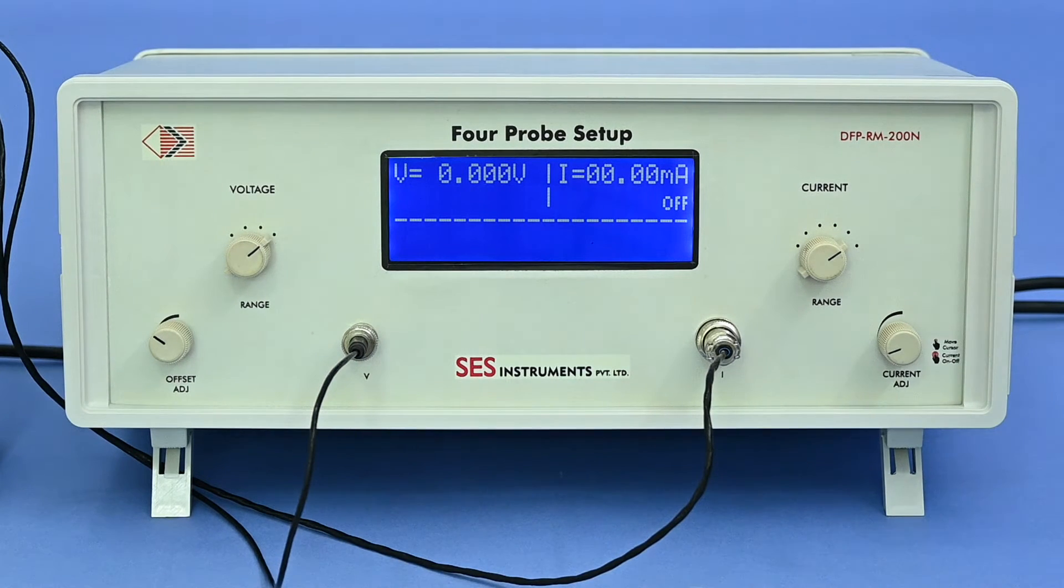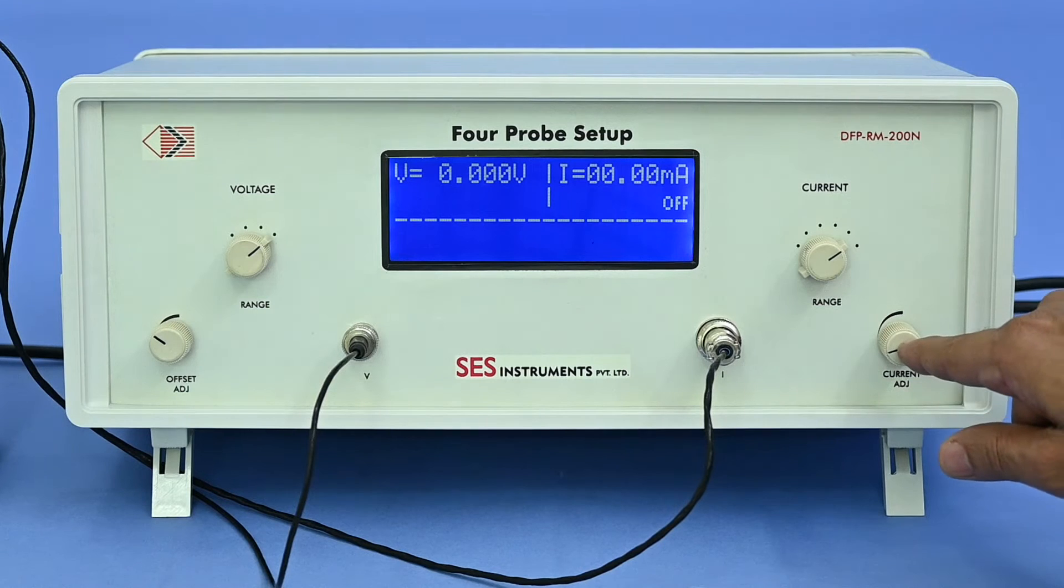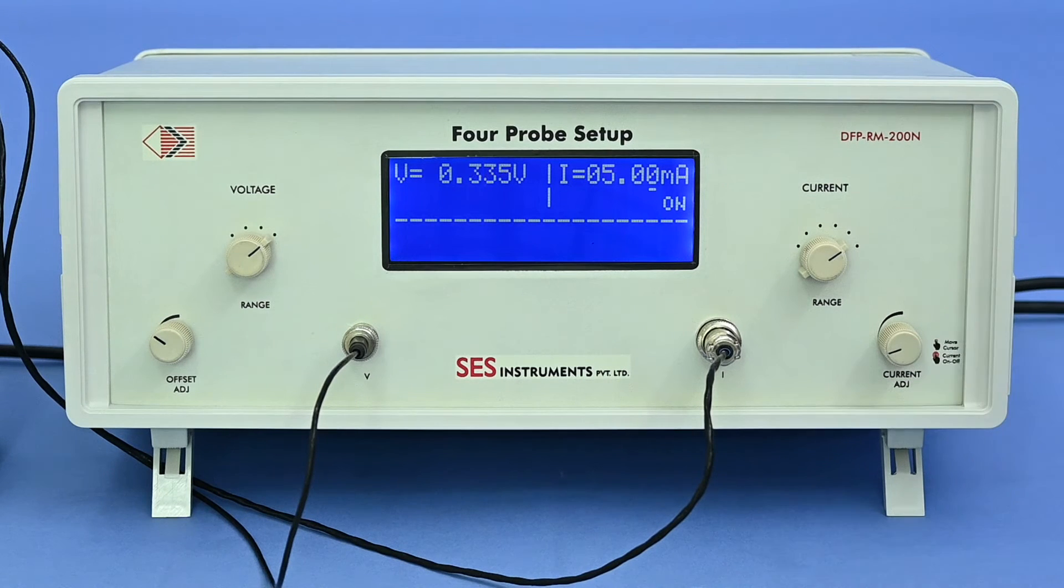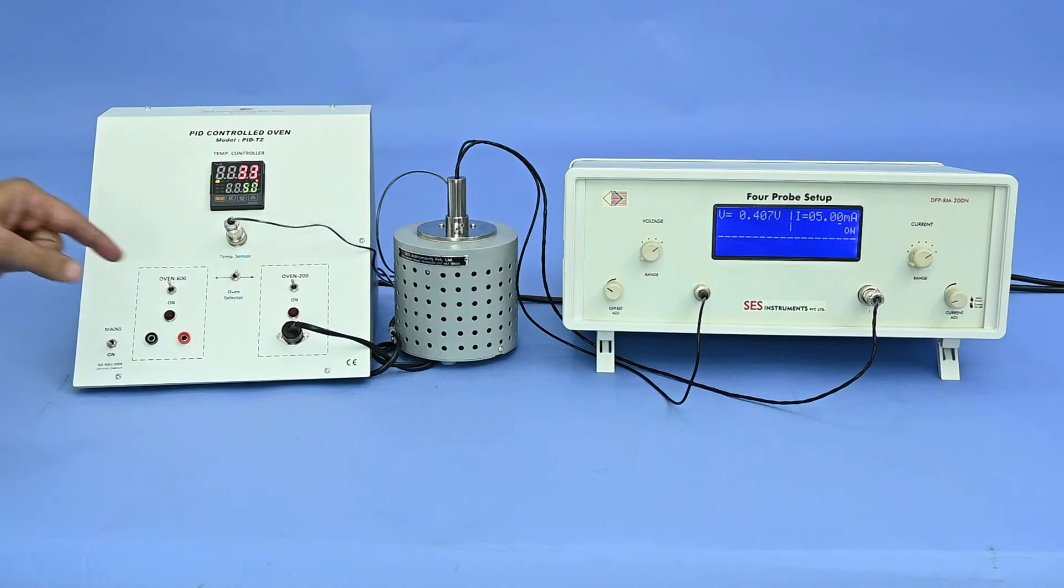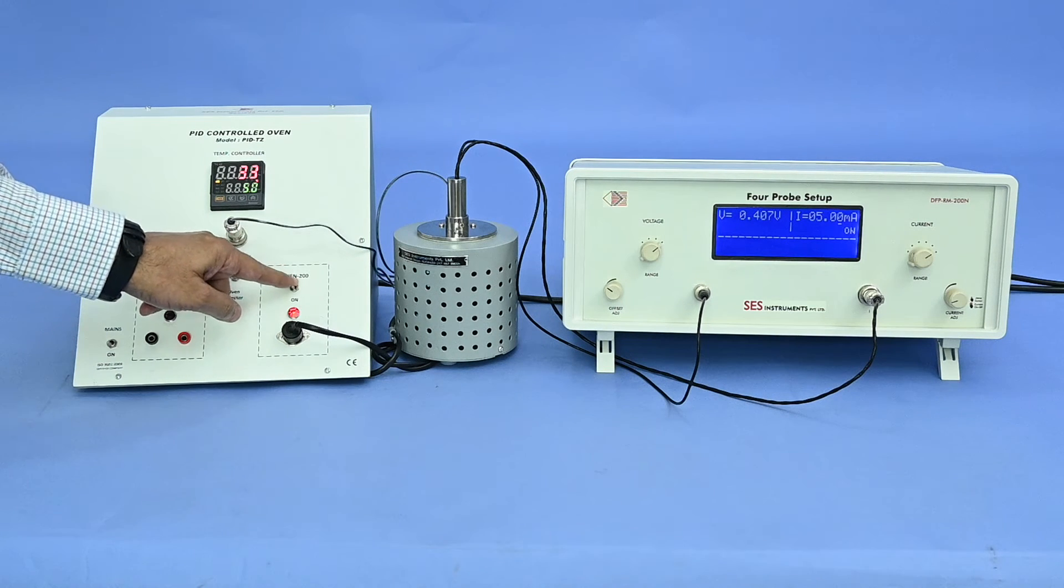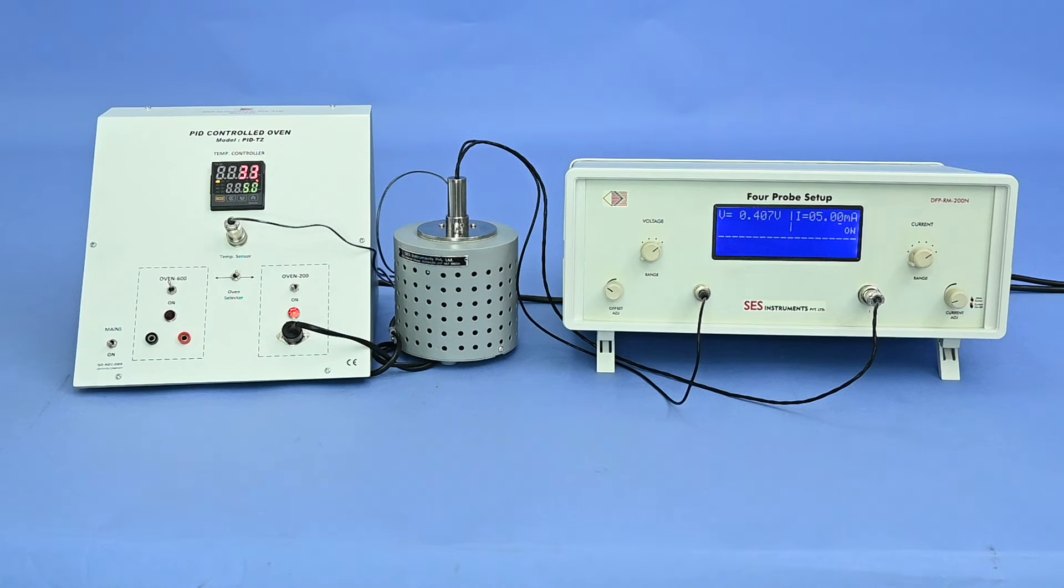Again, single press the current adjustment knob and get the adjusted current value with its correspondingly developed voltage at ambient temperature. Now oven may now be switched on and wait for some time till PV and SV stabilize and match. Now note down the value of voltage corresponding to that temperature.